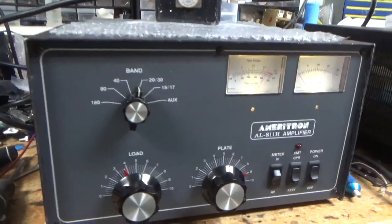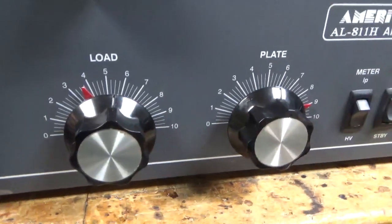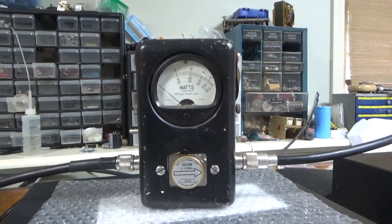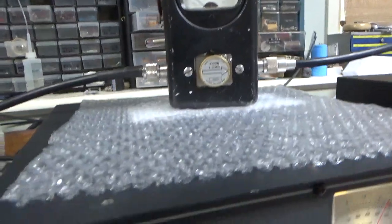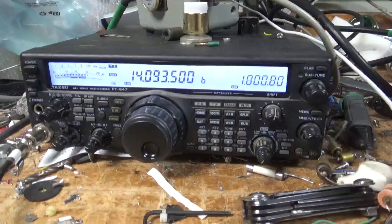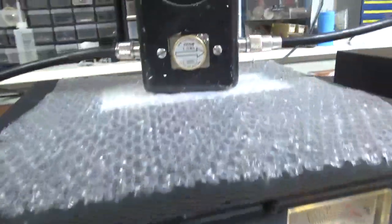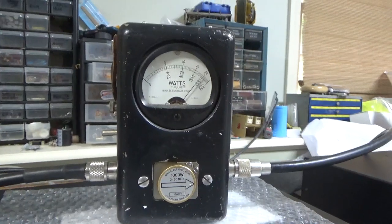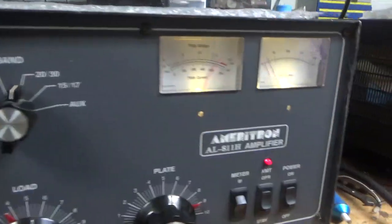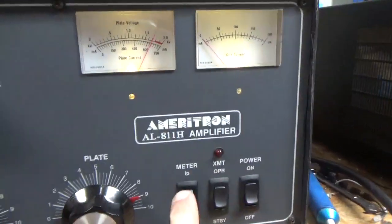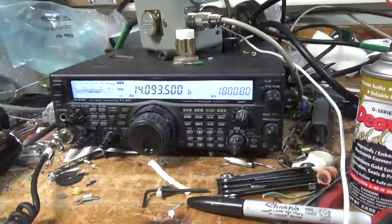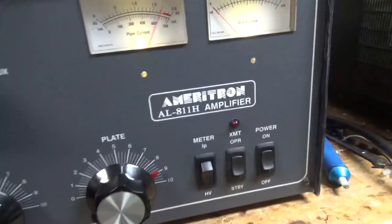Back with the completed Ameritron AL-811H. Customer wants to see it working on 20 meters, so it's on 20 meters. Settings: 1KW slug, Bird 43, Bird PEP kit, PEP kit is on, going into a Bird attenuator load. Frequency is 14.09, audio. About 70 watts or so.